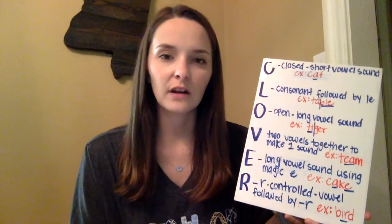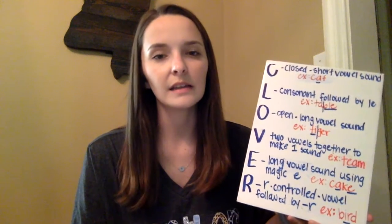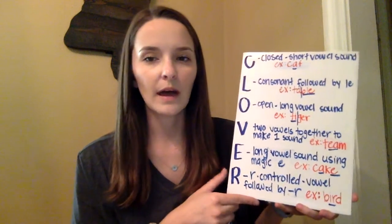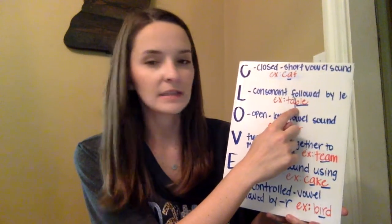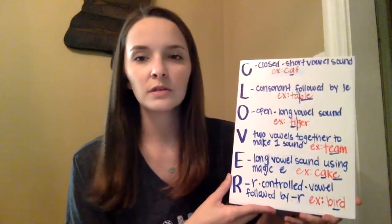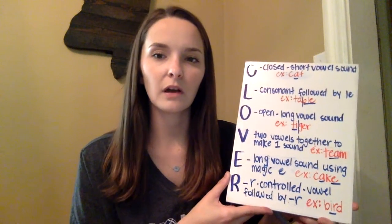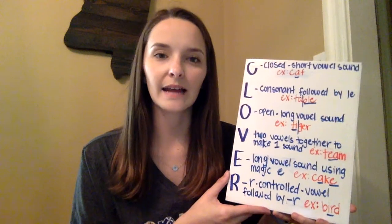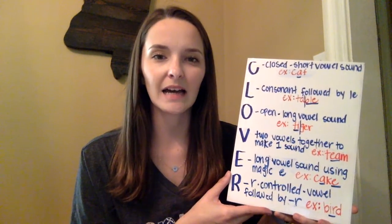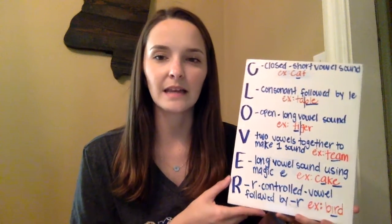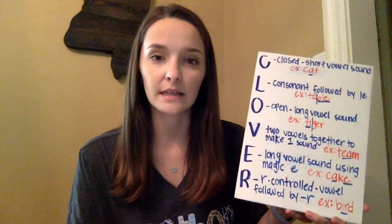The L stands for consonant followed by L-E. For example, 'table' — you have the B in the second syllable followed by L-E, so that would be consonant-LE. The O stands for open — that's when you have a long vowel sound. Our example for this one is 'tiger.' The I says its name; when a vowel is open, or long, it says its name.